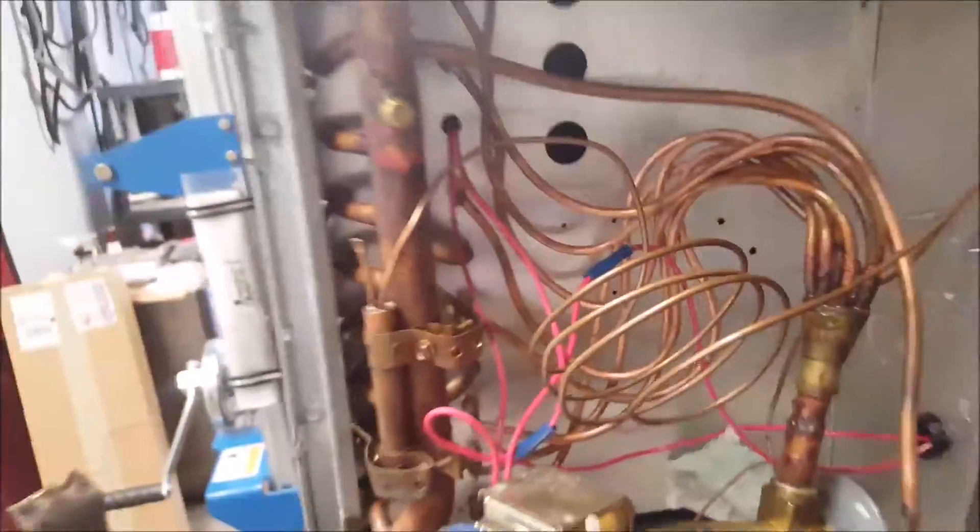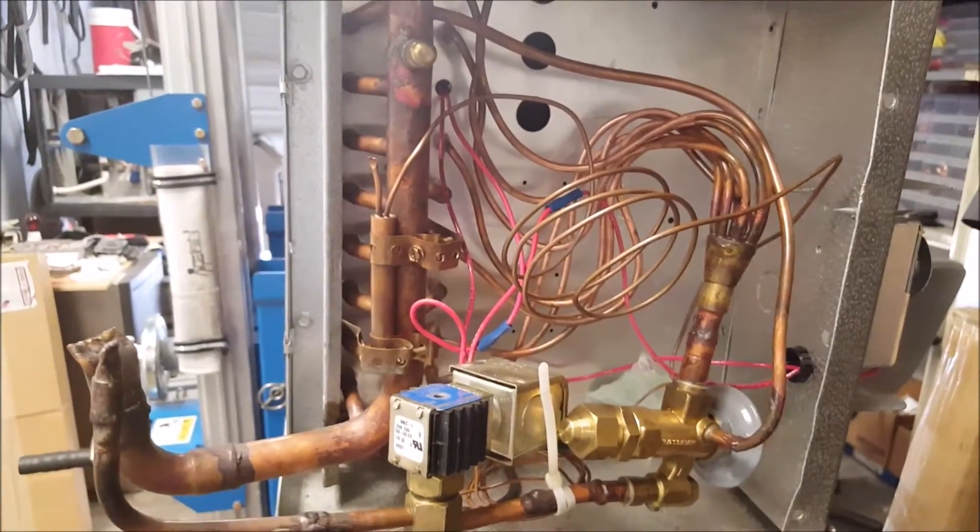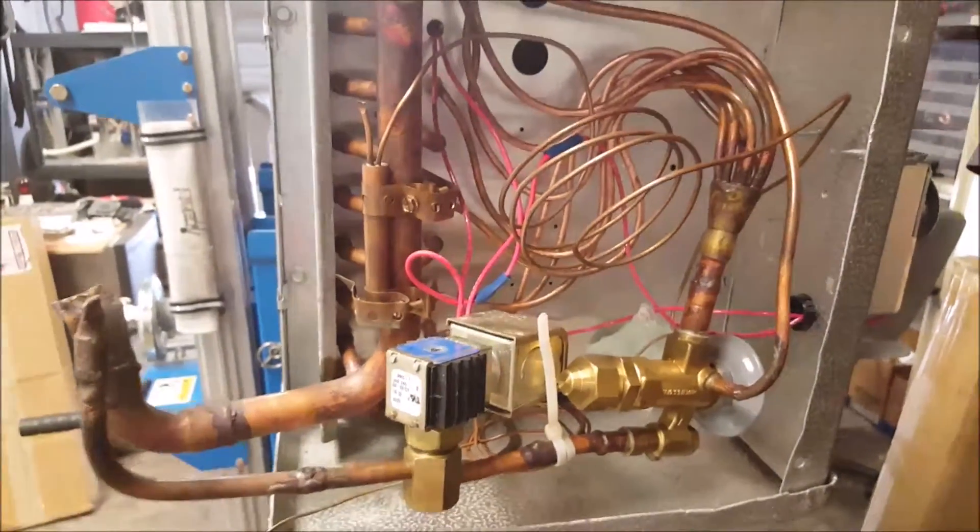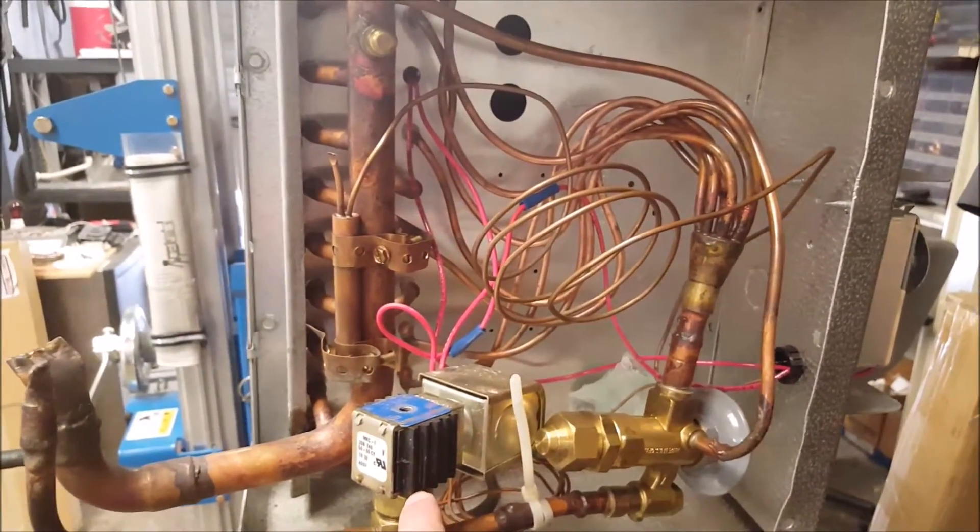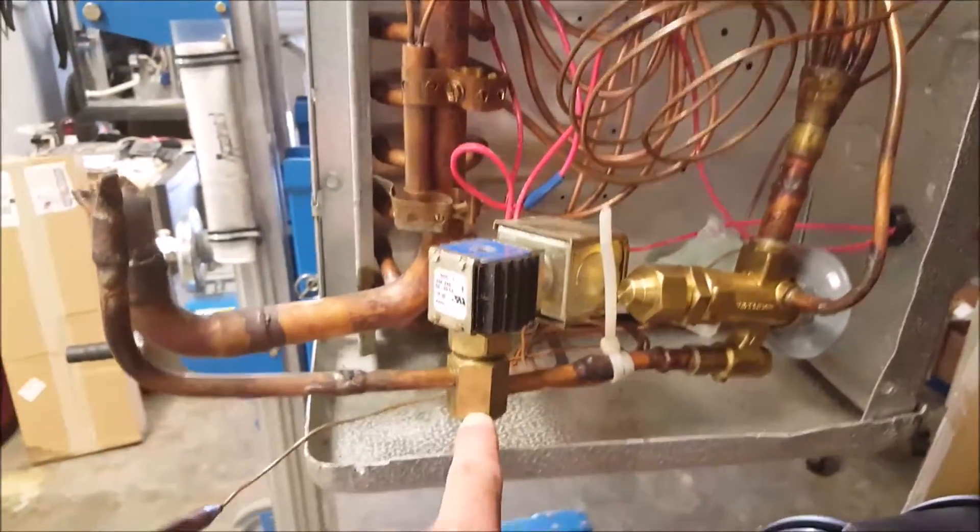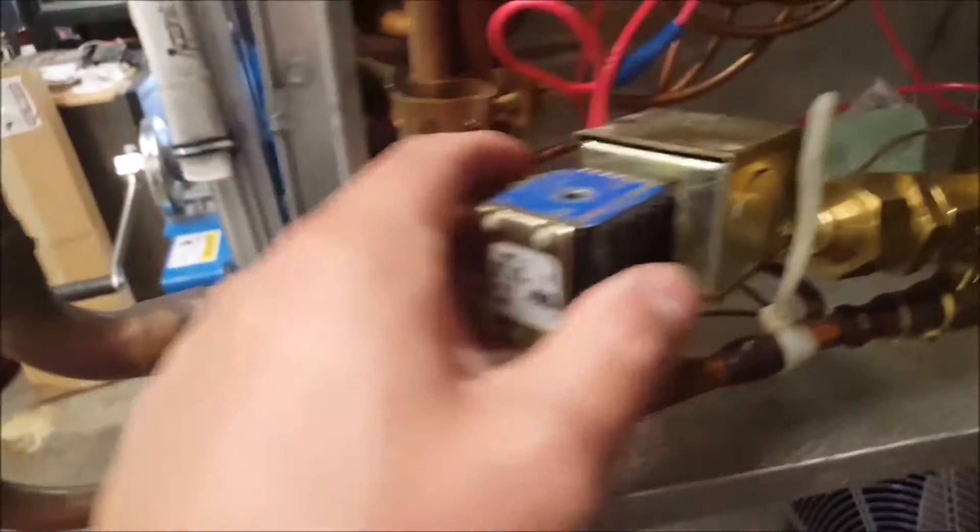All right, so we're back here on the unit. Here's the left side of the unit. We've got the expansion valve and our solenoid coil and our solenoid valve body. You can take this coil off of here by removing the top screw.